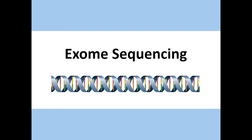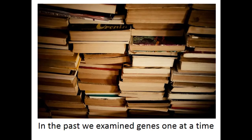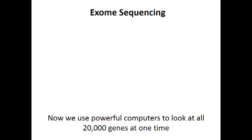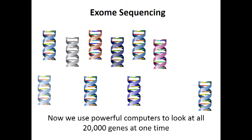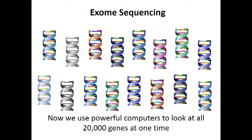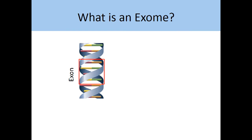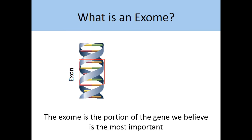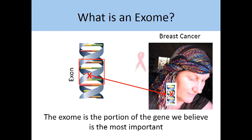This is a video about exome sequencing. In the past, we examined each of the 20,000 genes one by one for the genetic mutation that was the cause of the person's genetic disease. This took a long time. Now, we have the ability to look at almost all of our 20,000 genes at one time using powerful computers. This is called exome sequencing. An exome is the specific portion of the gene that we believe is most important for telling our body how to function and how to build working parts. This is where we believe most genetic mutations occur. The exome is the exons of all 20,000 of our genes.